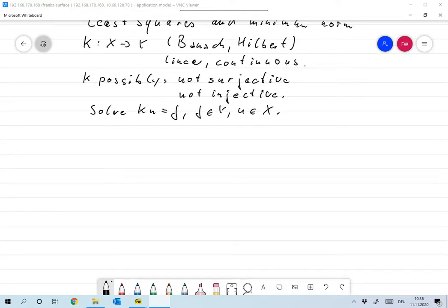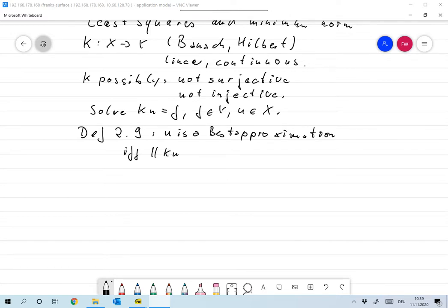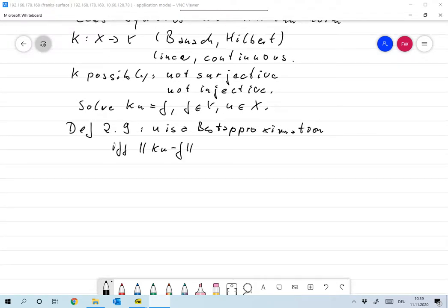Now let's give definition 2.9. u is the best approximation if and only if the norm of Ku minus f is less than or equal to the norm of Kv minus f for all v in X.